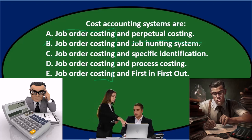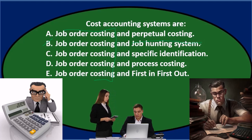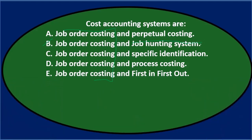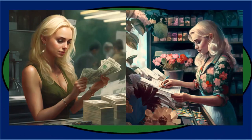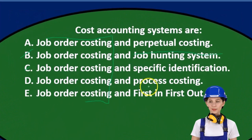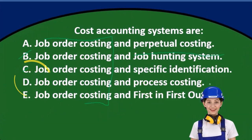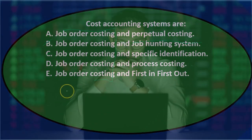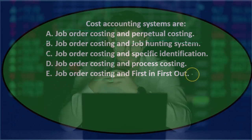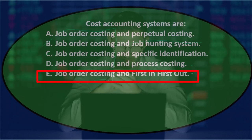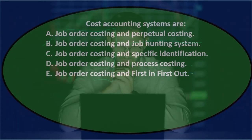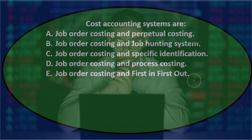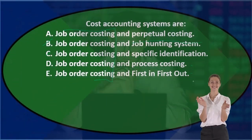Option C says specific identification. We may have heard that term, but it actually has to do with tracking inventory in a merchandising company — where we specifically identify inventory as it moves. So that's not typically a cost accounting system; it's more of a merchandising concept. Option D says process costing — that sounds familiar, so I'll keep that. Option E is first-in first-out, which is also a cost flow assumption used in merchandising, not a cost accounting system.